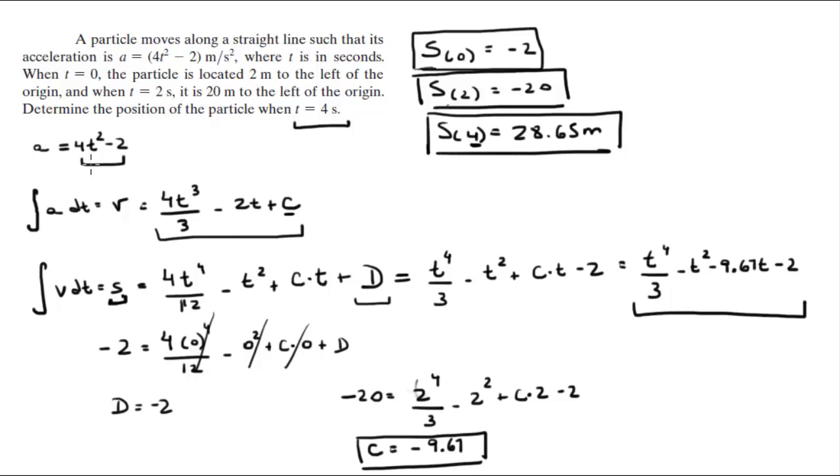So basically what we did is we have the acceleration with respect to time, we integrate it twice to find the formula for the position. The problem when we integrate it twice is that we get two constants, and we found the two constants with the initial conditions given in the problem, and that's how we found the formula for s with respect to time. Then we just plug in the 4 and we found the final answer.